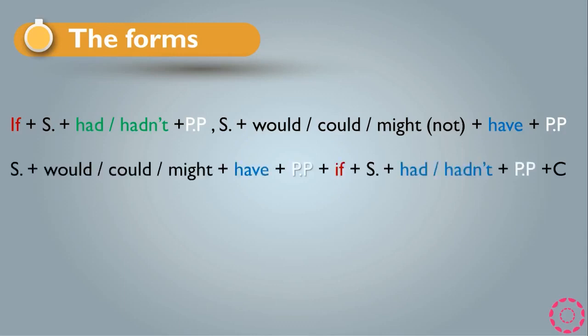Another rule: if we want to use if in the middle, we replace the second sentence to the first sentence, so it becomes subject plus could or might, and have, plus past participle (PP), plus if, plus subject, plus had or hadn't, plus past participle or complement. These are the two rules for third conditional sentences.